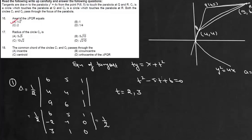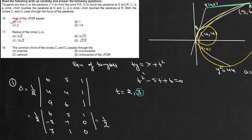The second part asks for the radius of circle C2. Both circles pass through the focus of the parabola at (1,0). For C2, we write the equation of tangent at R. For R, the value of t is 3, so the tangent is 3y = x + 9, or x - 3y + 9 = 0.